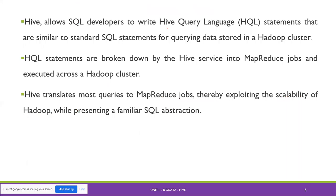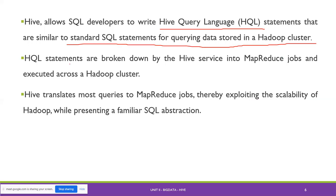Hive allows SQL developers to write HiveQL or HQL statements that are similar to standard SQL statements for querying data stored in a Hadoop cluster. The HQL statements are broken down by the Hive service into MapReduce jobs and executed across the Hadoop cluster. Hive translates to MapReduce jobs, exploiting the scalability of Hadoop by presenting a similar SQL abstraction.